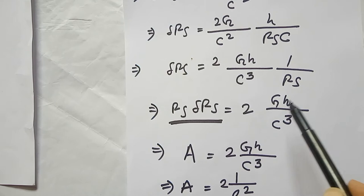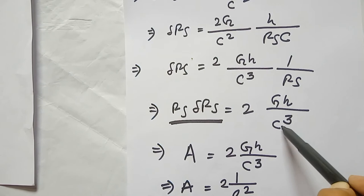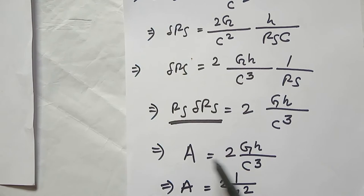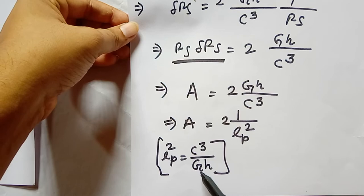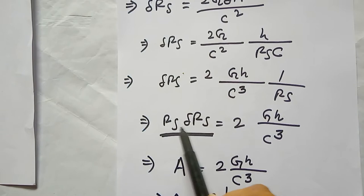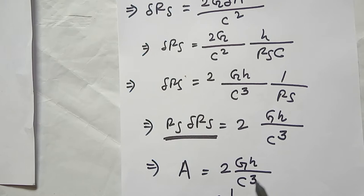The term Gh divided by c cubed is the Planck length squared. The Planck length lp is defined such that lp squared equals Gh divided by c cubed. This expression has the dimension of area. So we can write the area change as A equals 2Gh divided by c cubed, or equivalently A equals 2 times lp squared.